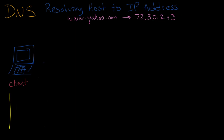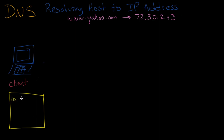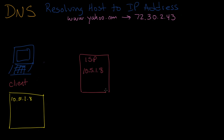The client computer issuing a DNS request needs to know what DNS server to contact to act on its behalf in order to fulfill that request. So somewhere on that computer is a configuration that consists of an IP address telling it what DNS server to contact. It might have obtained this IP address from the router when it booted up, or someone might have manually entered it into the DNS configuration control panel. Let's say that the IP address in this configuration is 10.5.1.8, which is the IP address of a DNS server for the internet service provider.